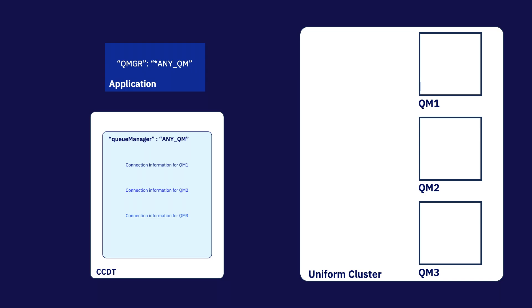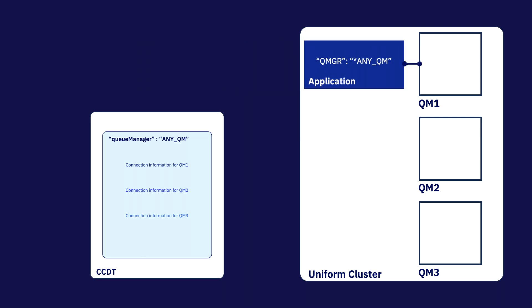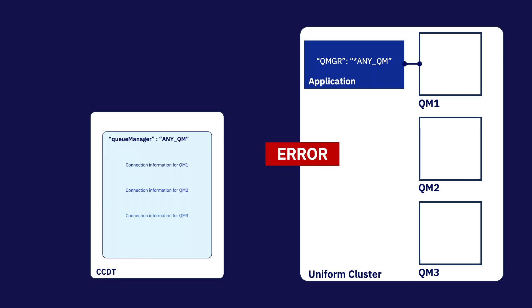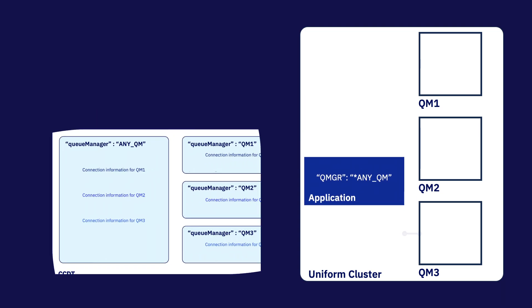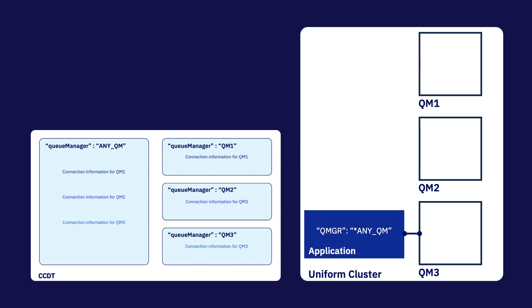For example, your application might enter the uniform cluster by connecting to QM1 and later be asked to connect to QM3. If we only had the first channel definition, the application would look for a queue manager named QM3 in the CCDT and be unable to find it, so it wouldn't reconnect. Having the specific channel definitions means that it can connect to a specific queue manager by name once it's in the uniform cluster. It's important to note that no actual developer intervention is needed for application rebalancing — the MQ client libraries take responsibility for connecting to queue managers, and the process is invisible to your application.